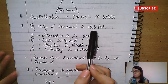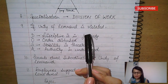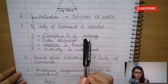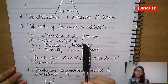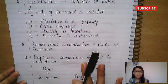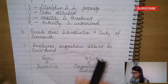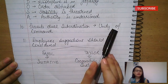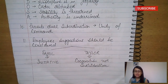Specialization is the key word for division of work. If unity of command is violated, then DOSA happens — discipline is in jeopardy, order is disturbed, stability is threatened, and authority is undermined. This has been explained in previous videos. Unity of command prevents dual subordination.